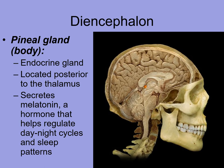The pineal gland is located posterior to the thalamus. It is an endocrine gland and it does secrete melatonin. When we study the endocrine system, you will find that melatonin is a hormone that helps to regulate our day and night cycles and our sleep patterns. It is very small, but it is posterior to the thalamus.